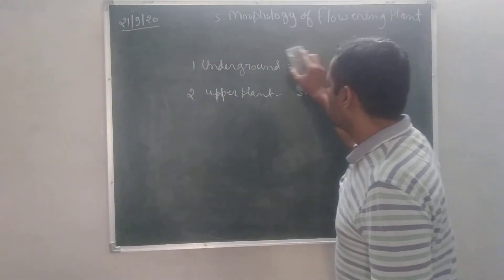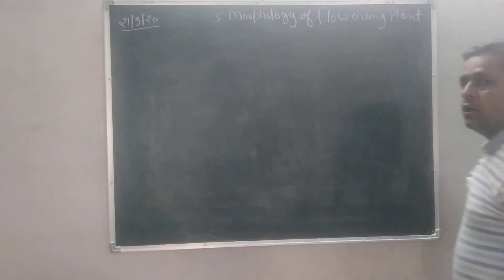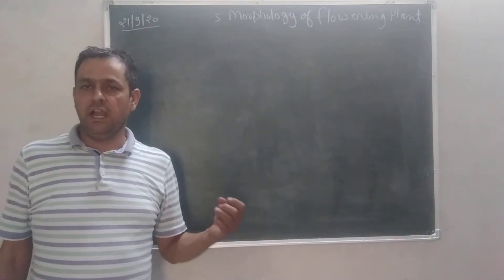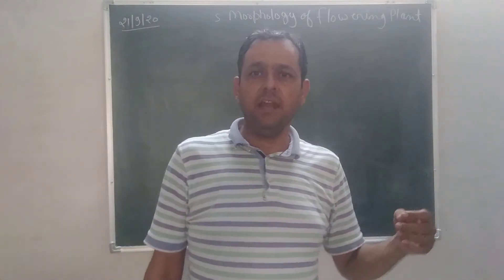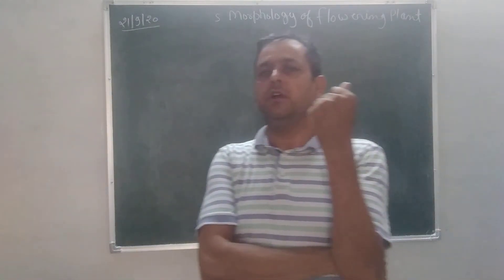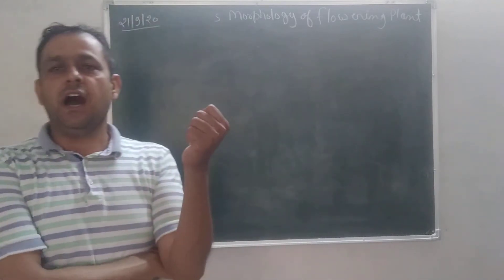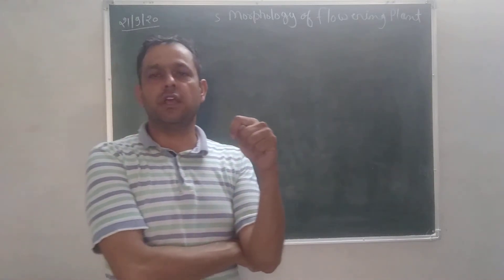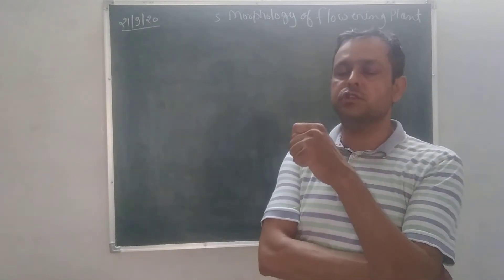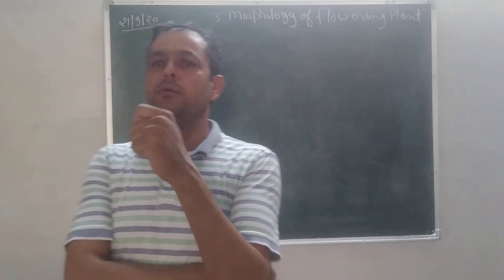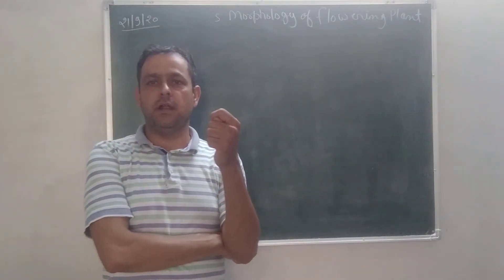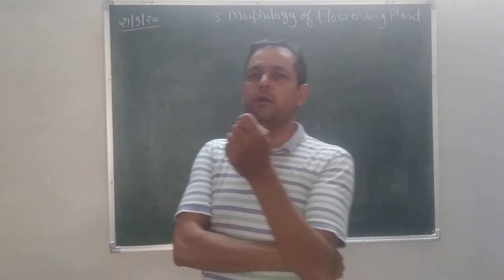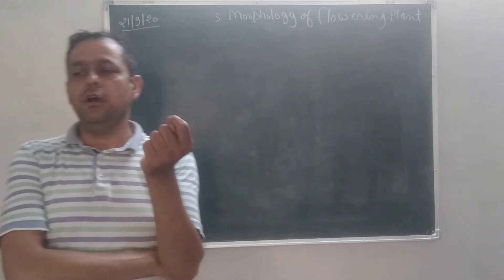What is root? Root is the underground part or the plant part which grows positively geotropism and negatively phototropism. Root lacks auxiliary buds and node and inter-node which are present on stem. Roots have colorless structure because of lack of chlorophyll.